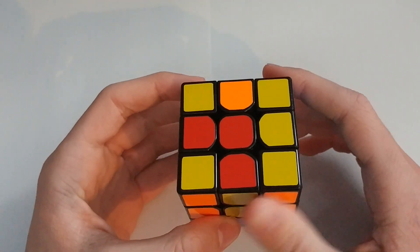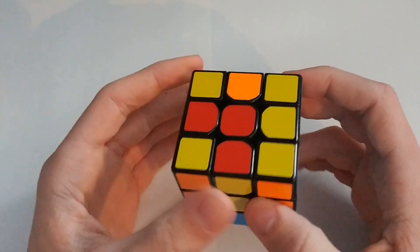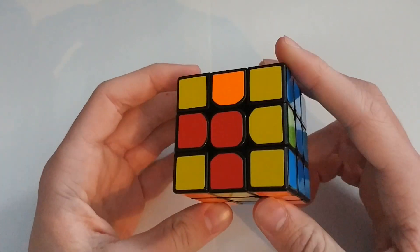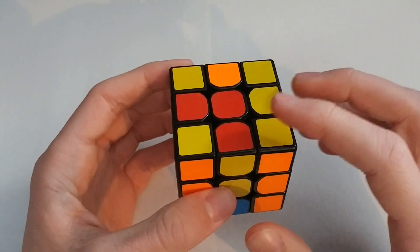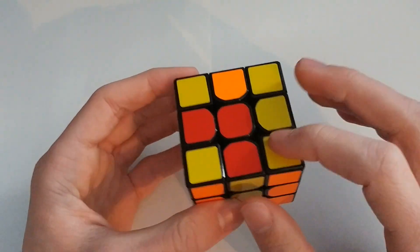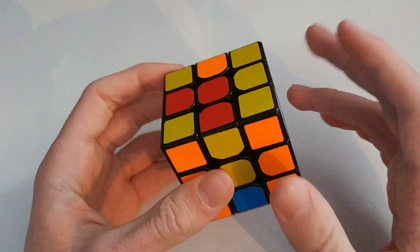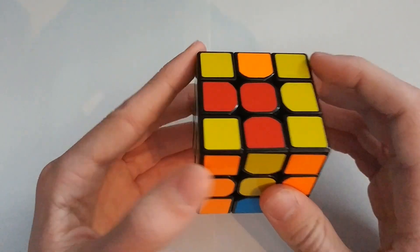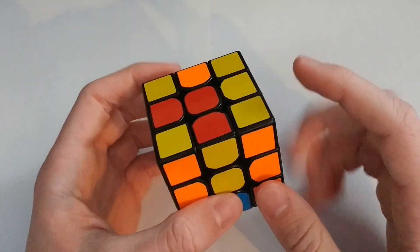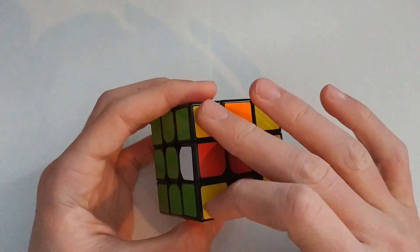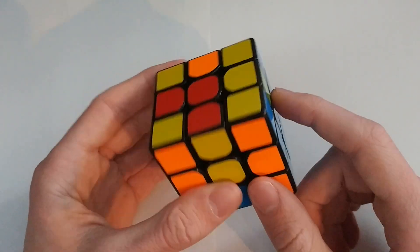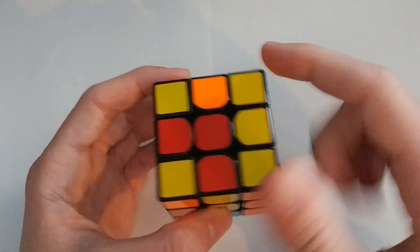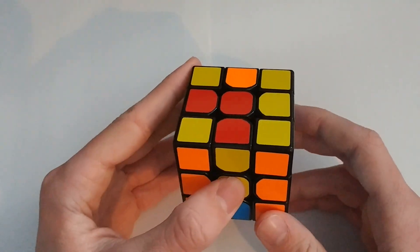So you can learn full CMLL, which you should do eventually, which is 42 algorithms. You look at whatever combination these pieces are in and you do one algorithm to solve everything. 2-look, on the other hand, first we need to orient the stickers so yellow is all facing up, and then we permute them and move around the pieces so that they're in the correct positions.